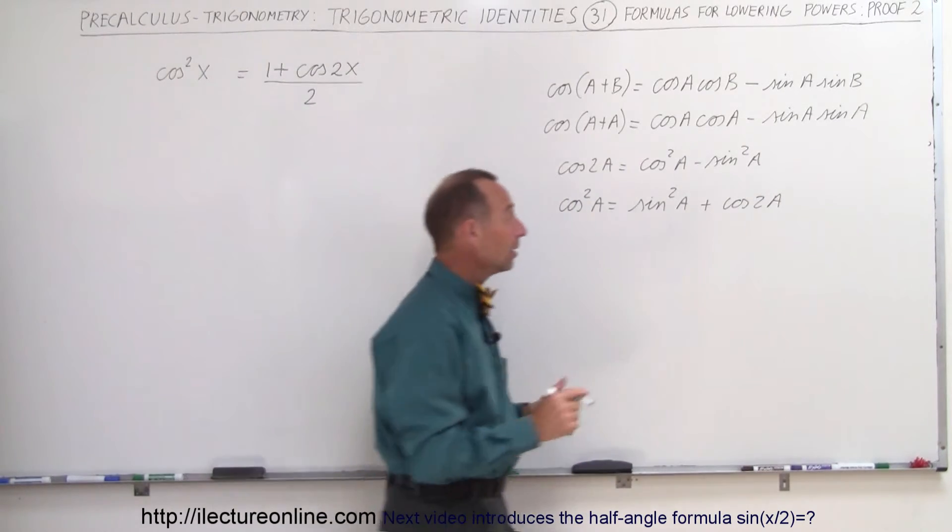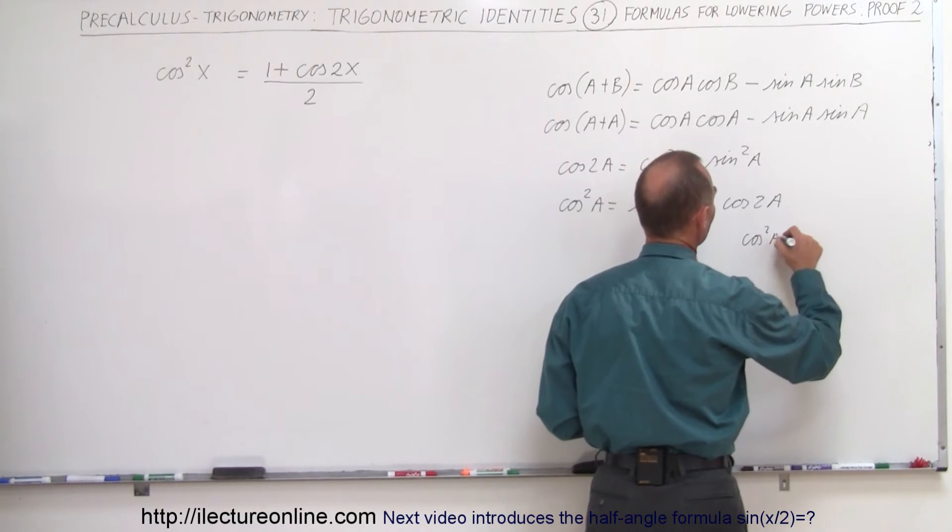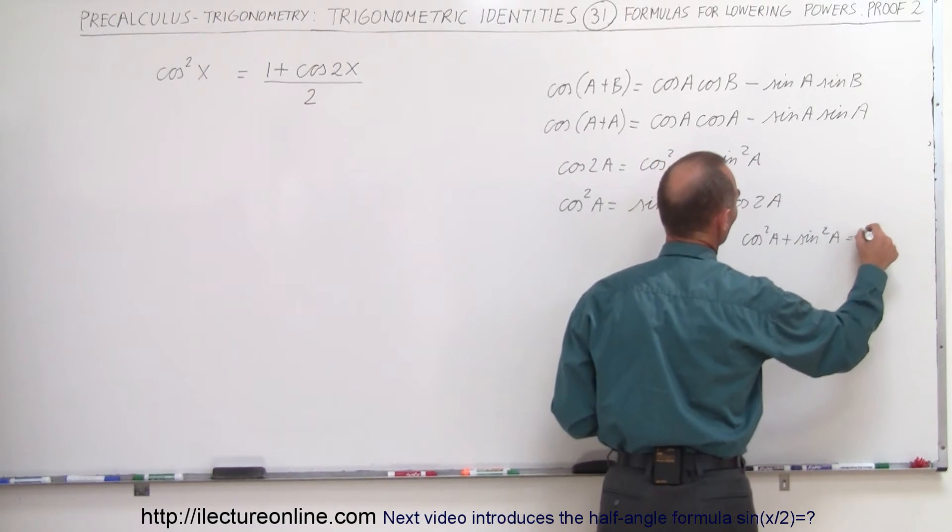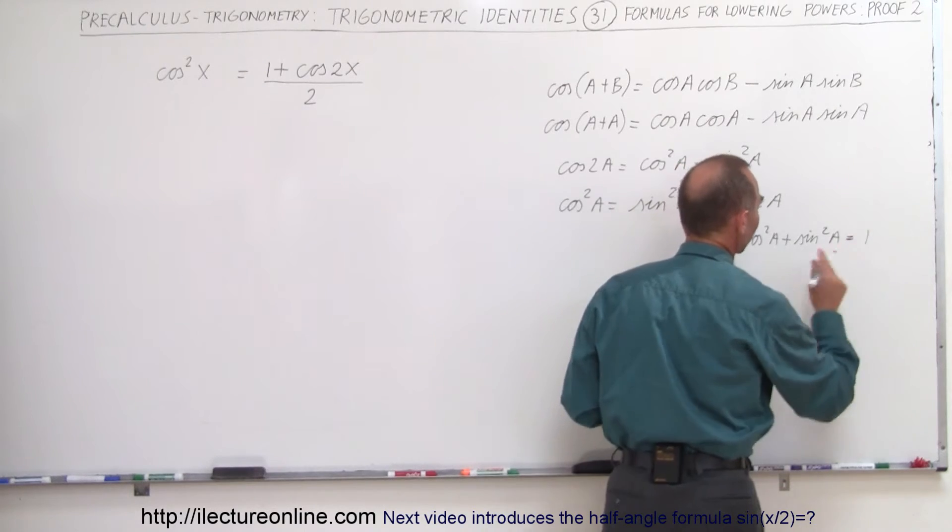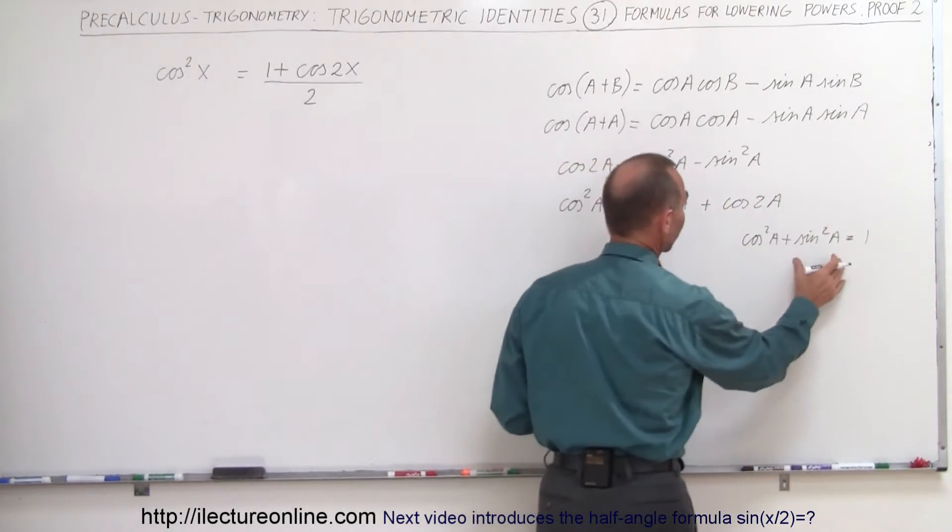So now again we go to the identity that everybody knows that the cosine squared of a plus the sine squared of a is equal to 1. This is probably the most fundamental identity in trigonometry which allows us to write the sine squared of a as follows.